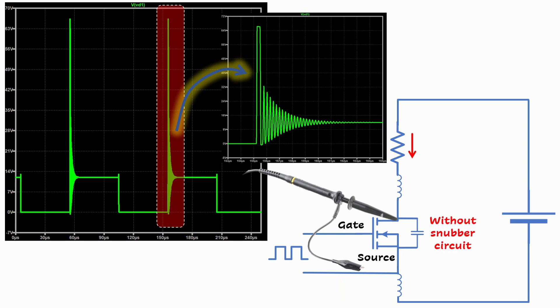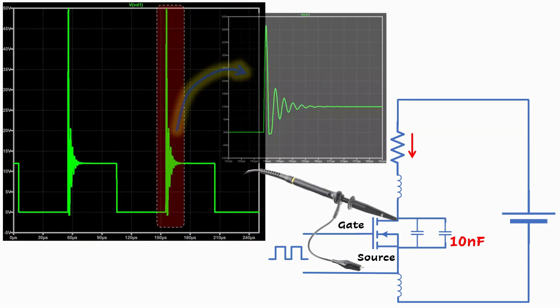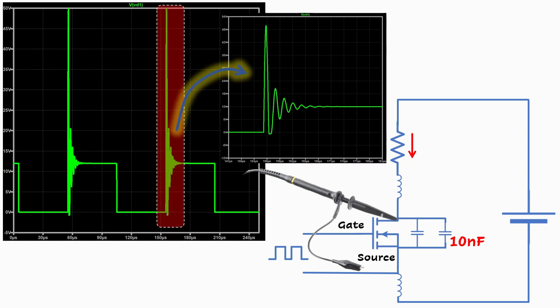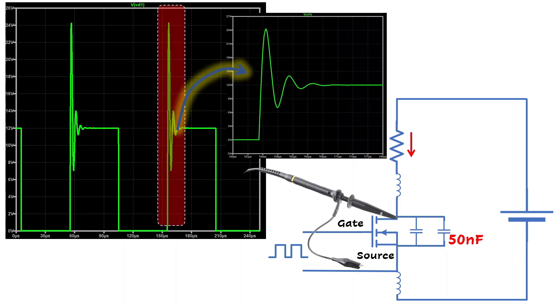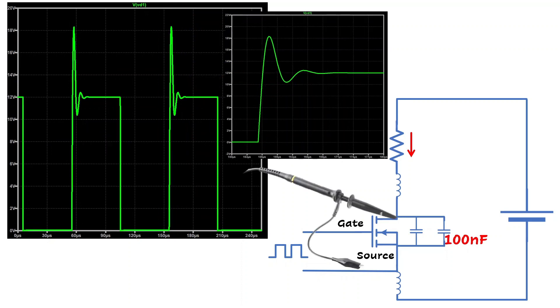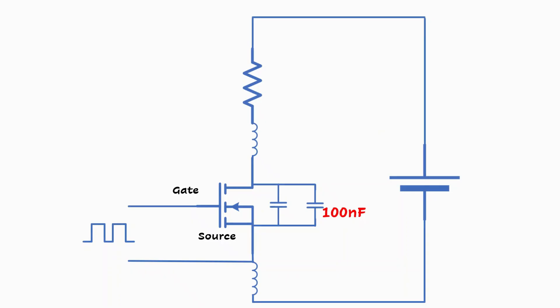To damp this oscillation, let's start adding a capacitor across the drain to source. A value of 10nF decreases the peak to less than about 50V. A value of 50nF decreases the peak to less than about 25V, and both dampen the oscillation. A value of 100nF decreases the peak to less than 20V and provides a satisfactory response. So that means if we increase that capacitance, that would bring less peak and damp the oscillation.